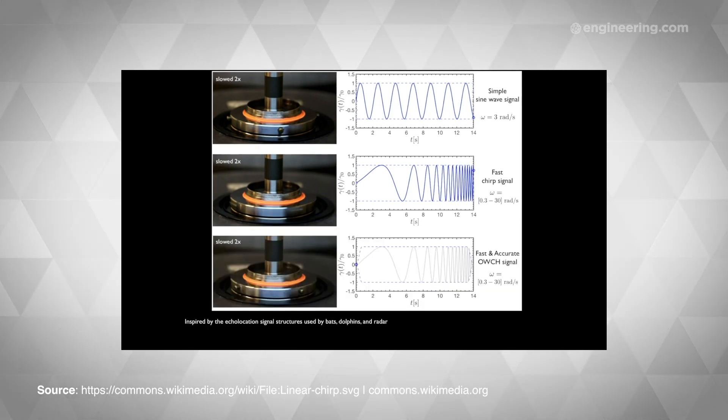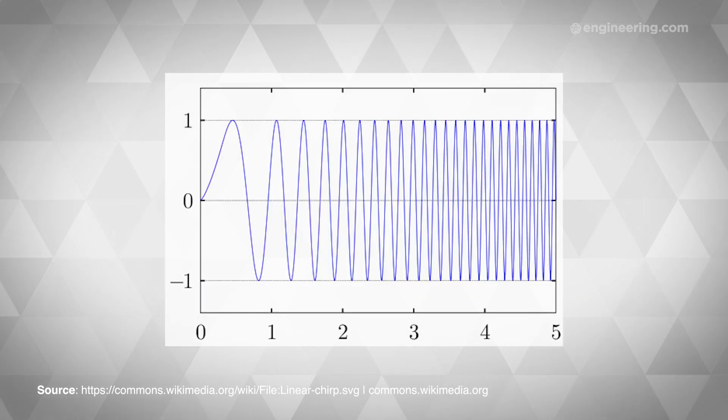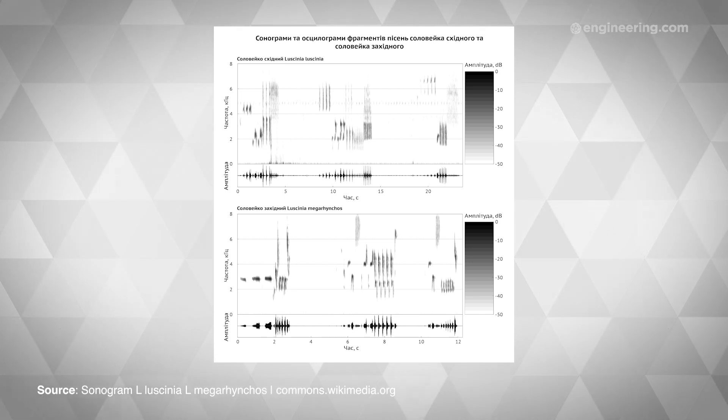The new approach from MIT compresses the frequency profiles that are sent to the rheometer motors into chirps, which are shorter, faster, and more complex. These chirps resemble the vocalizations of birds, bats, and dolphins.